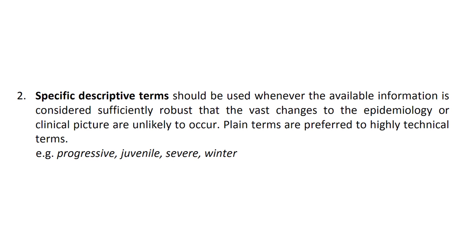Number two: specific descriptive terms should be used whenever the available information is considered sufficiently robust that vast changes to the epidemiology or clinical picture are unlikely to occur. Plain terms are preferred to highly technical terms — for example, progressive, juvenile, severe, winter. This is one of the reasons why they've changed the term of diabetes from juvenile and adult onset diabetes to type 1 and type 2. Type 1 diabetes is due to an autoimmune disorder that attacks the insulin producing cells in the pancreas, whereas type 2 is the formation of insulin resistance or the loss of insulin production, which is often caused by environmental factors such as weight, diet and age. Due to the increase of people under 40 getting adult onset diabetes, they had to change the names to type 1 and type 2 diabetes.